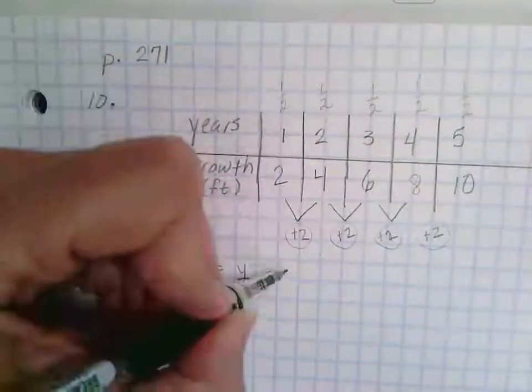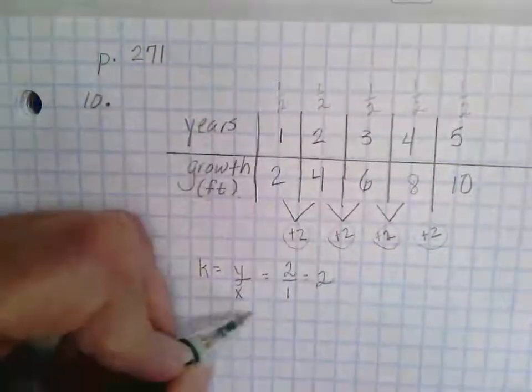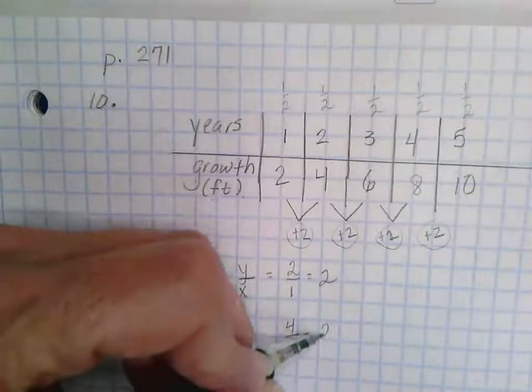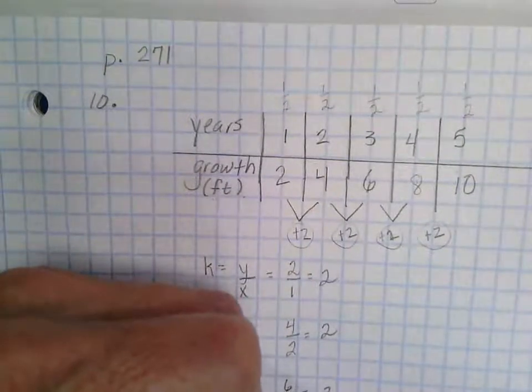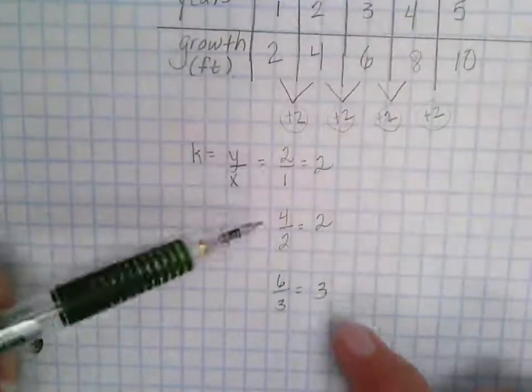Or by using my equation k equals y over x. In that case I would have 2 over 1 which equals 2, 4 over 2 which equals 2, 6 over 3 which equals 2. So you can see that I can figure this either way.